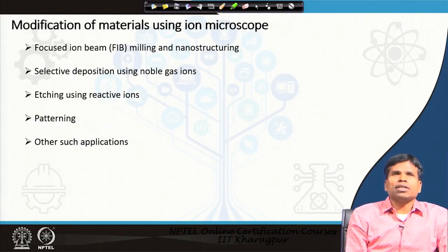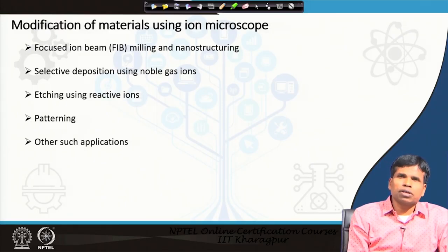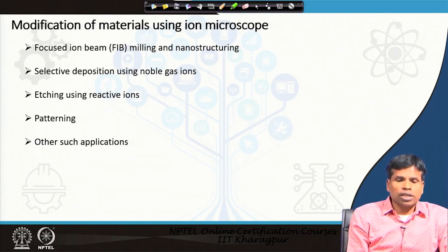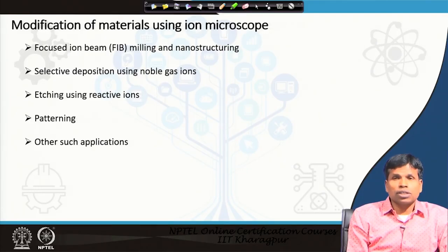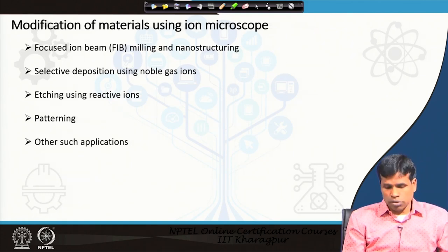We can certainly modify materials using an ion beam through milling or through deposition. Because a focused ion beam is placed on the specimen — that is why we call it a focused ion beam, or FIB — it can produce nanostructures of desired shape and size. One can also do selective deposition using noble gas ions if suitable precursors are available, do etching using reactive ions, and perform patterning and other applications using the ion microscope.